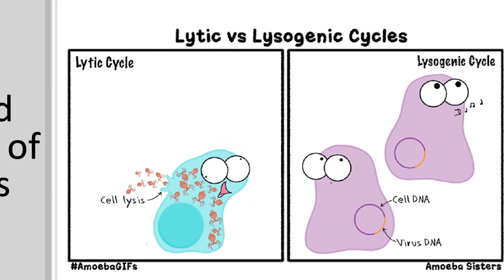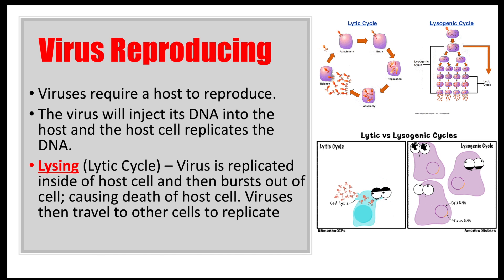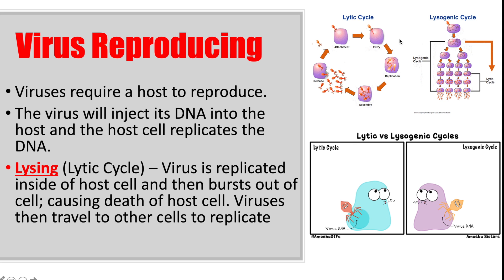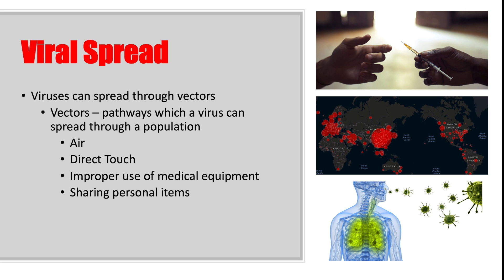This process is known as the lytic cycle. Once those viruses reproduce, they release from the host cell, causing the host cell to die, and then start to infect neighboring cells. There are different ways viruses spread among the population — these are known as vectors. Viruses can be airborne, spread through direct touch, improper use of medical equipment, sharing personal items like toothbrushes, drinking after someone, or the exchange of bodily fluids.